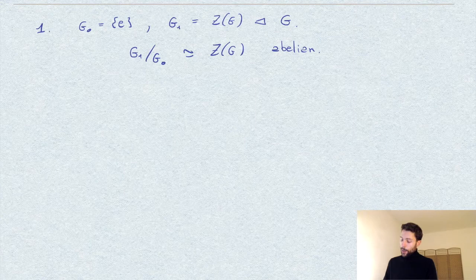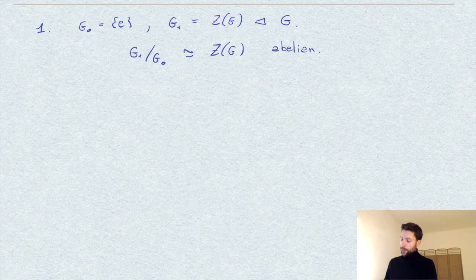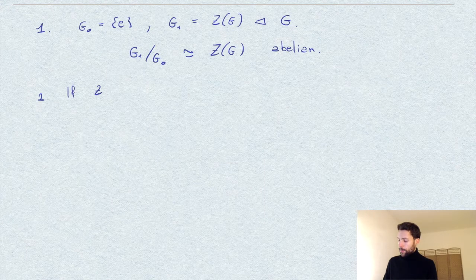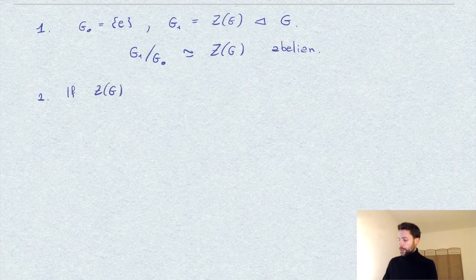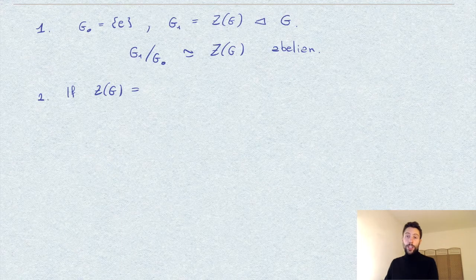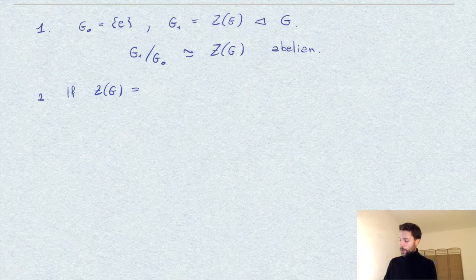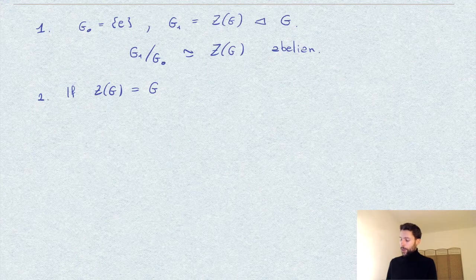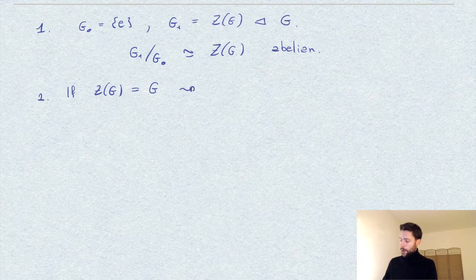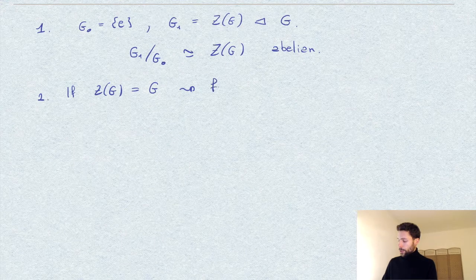For step number two: if the center is the whole group, meaning that the G we started with was already abelian, then we are done. We constructed our sequence, so we are finished here.